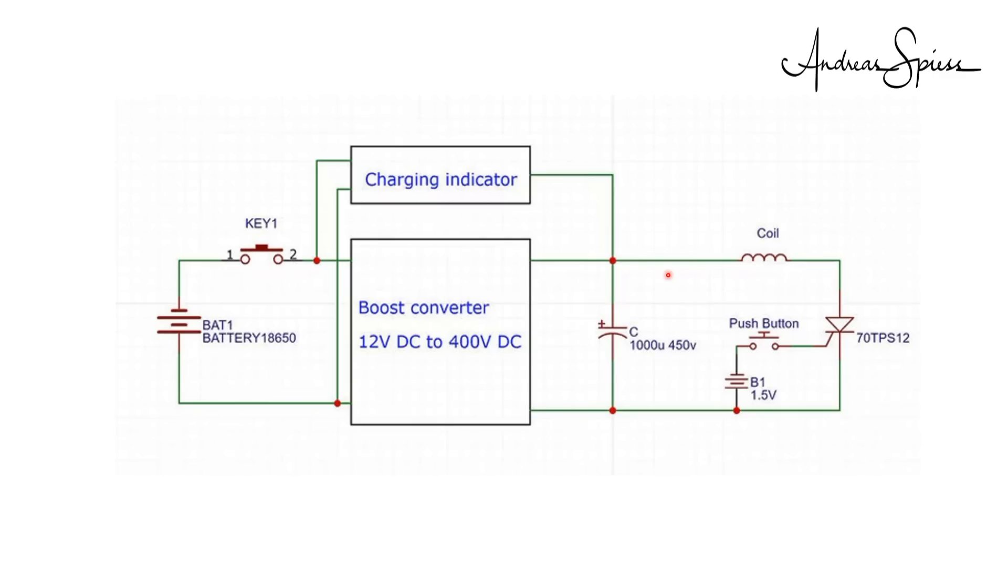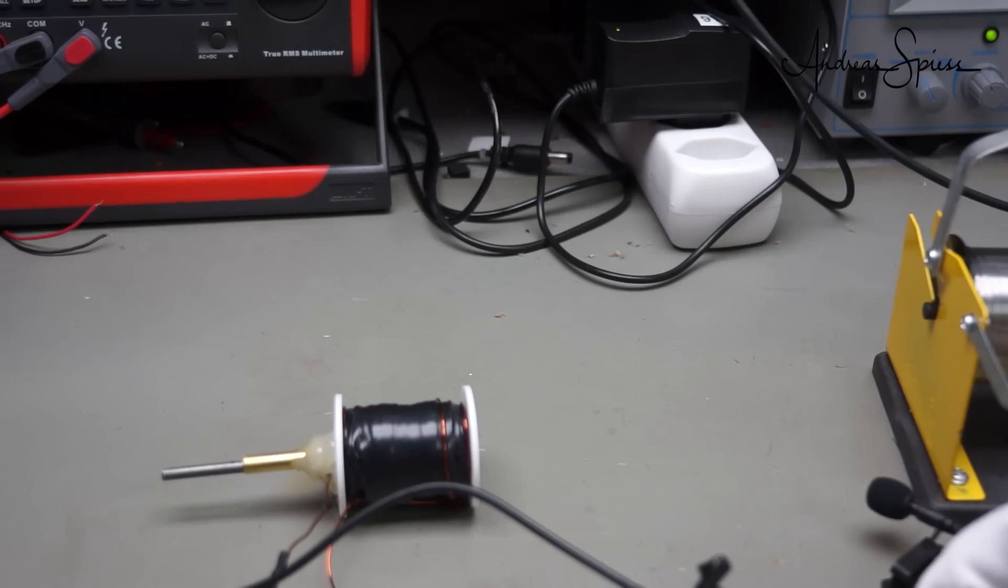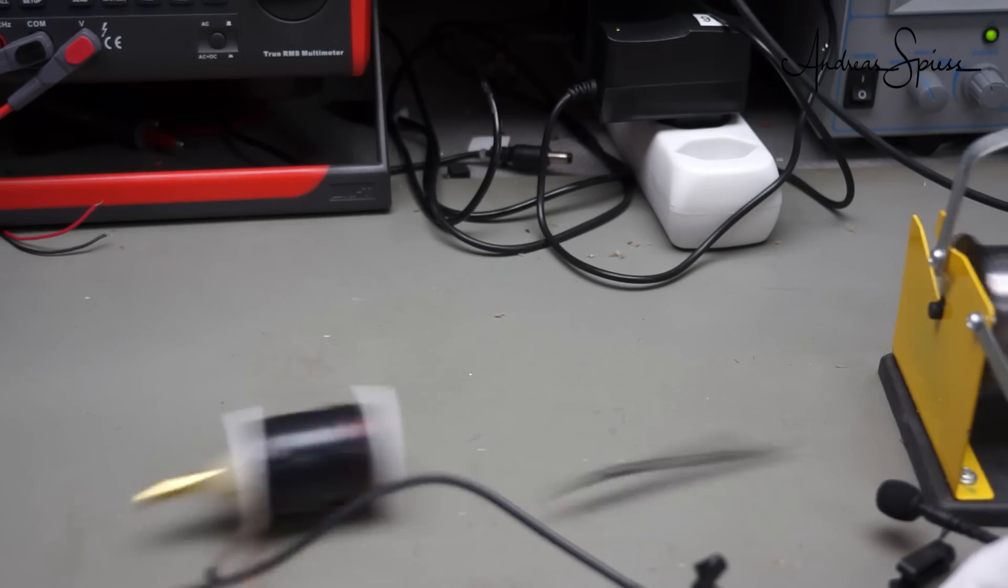You can imagine how annoyed I was about forgetting to check everything before powering up. As usual, I had ordered a few thyristors more and corrected the circuit. And because I learned something, I used a 1.5 volt battery to power the gate. I did not want to sacrifice another valuable equipment of my lab. And really, it worked. The bullet moved quite fast out of the coil.